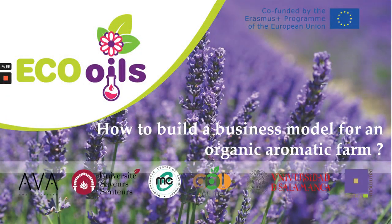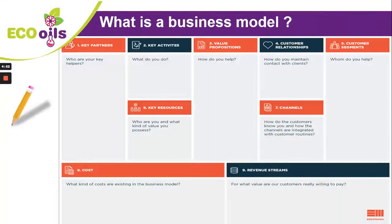How to build a business model for an organic aromatic farm. We will base our reflection on the business model Canvas, a tool invented by the Swiss businessman Alexander Osterwalder. It is useful to implement and follow the development of each activity forming the enterprise. It is a strategic management template, and this is how your aromatic plant production will make you earn money.